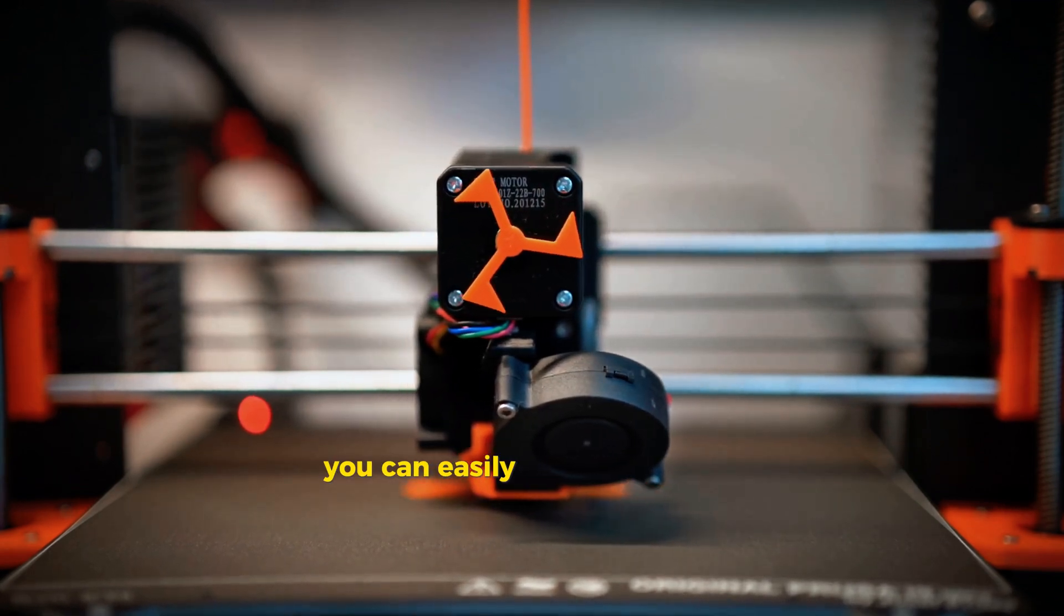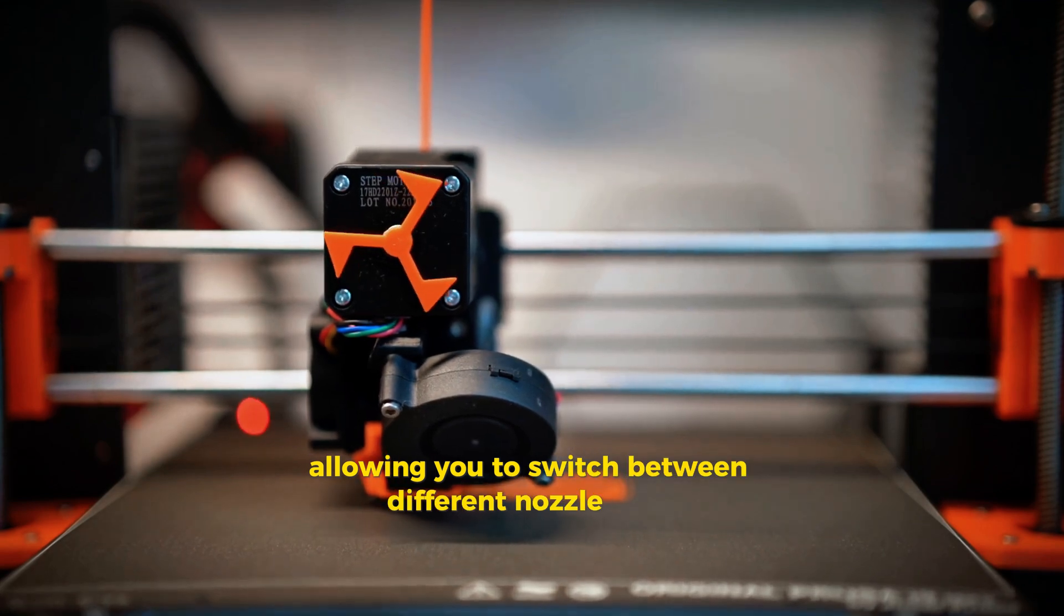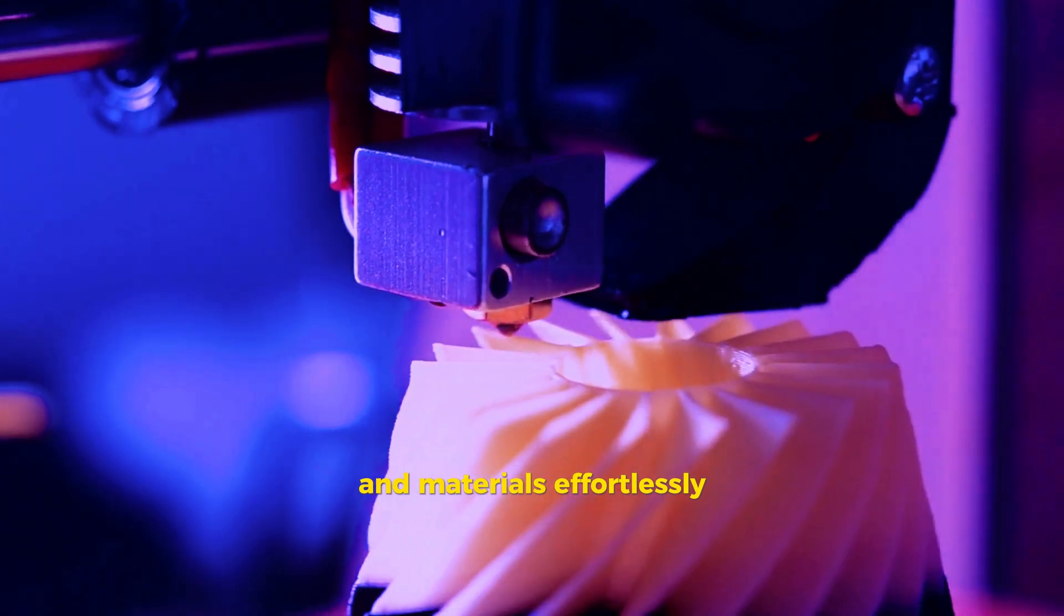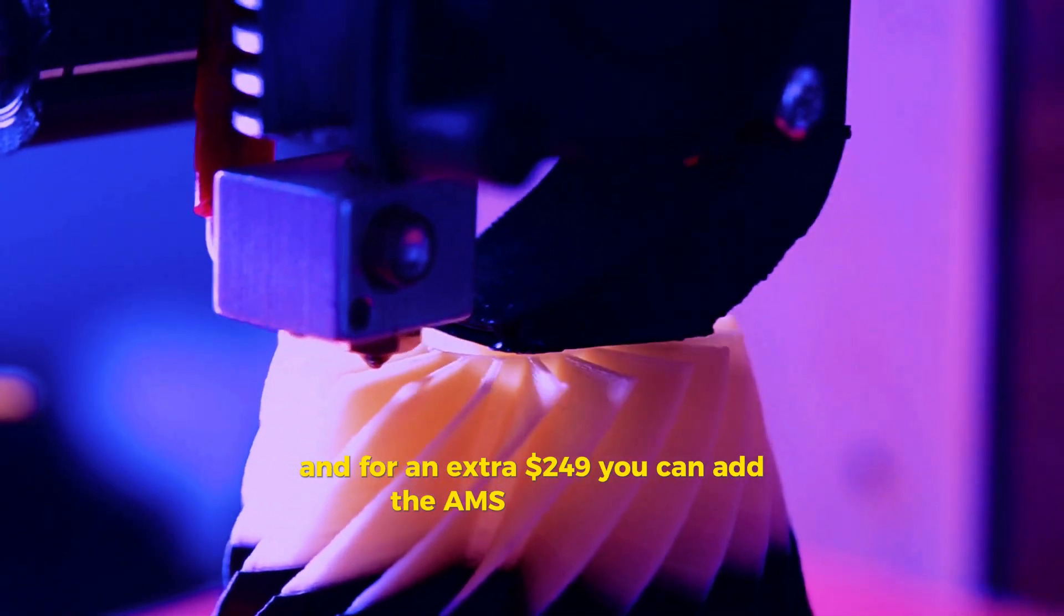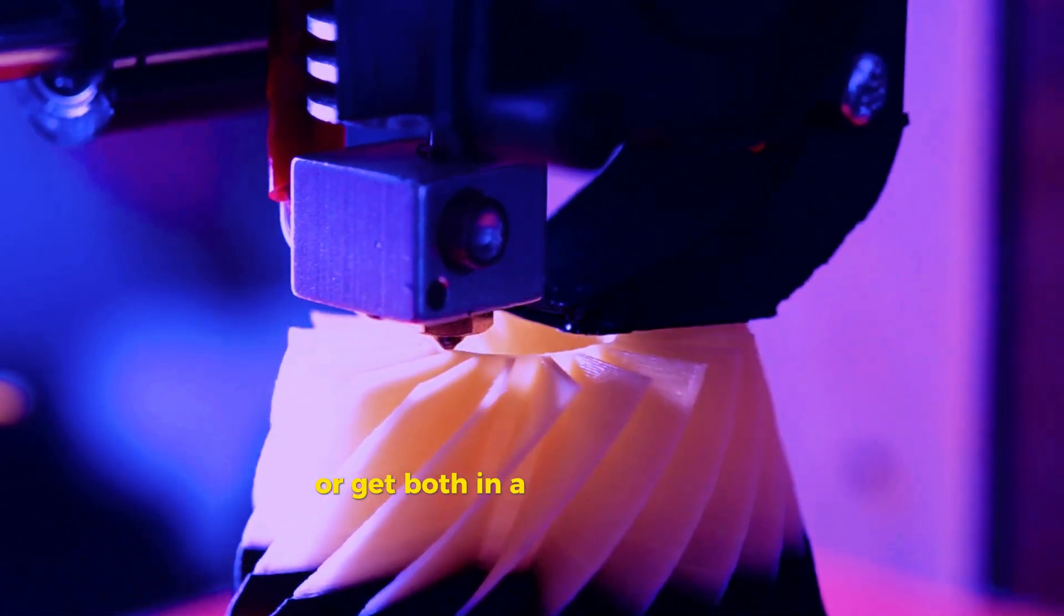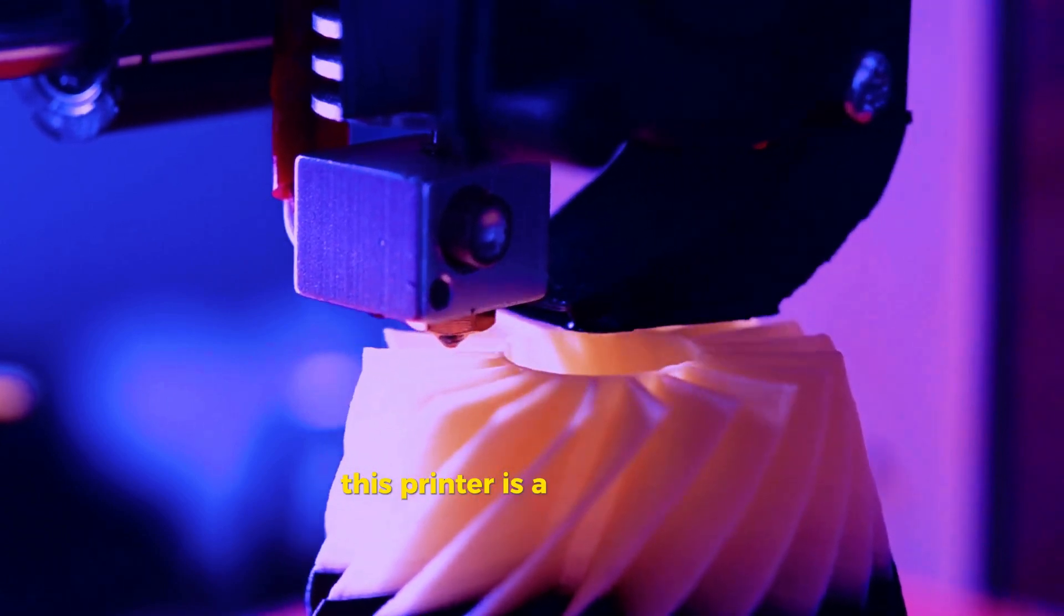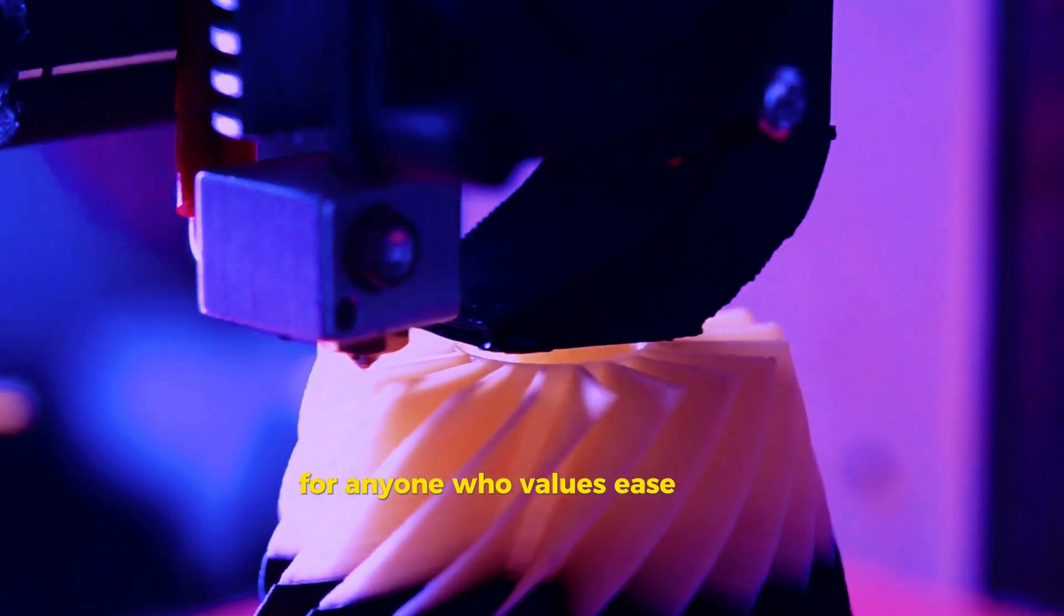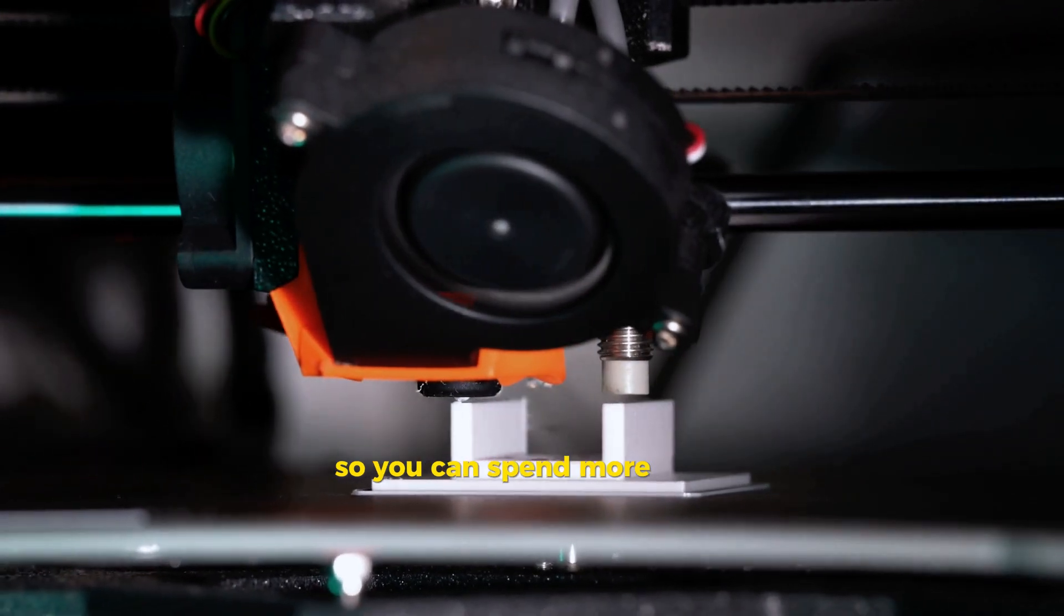One of the standout features of the Bamboo Lab A1 is the toollessly swappable hot ends. This means you can easily change nozzles with just one hand, allowing you to switch between different nozzle sizes and materials effortlessly. And for an extra $249, you can add the AMS Light system to use different colors and materials in the same print, or get both in a bundle for $559. This printer is a great choice for anyone who values ease of use.